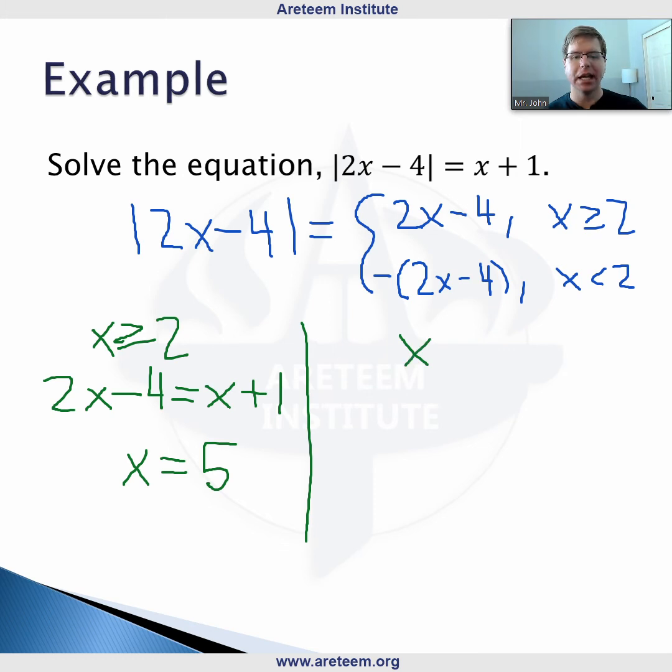In the other case we have x is less than 2. Then here we are solving this equation, negative 2x plus 4 is equal to x plus 1. So here we can move the x's around, we have 3 is equal to 3x, and this tells us that x is equal to 1.